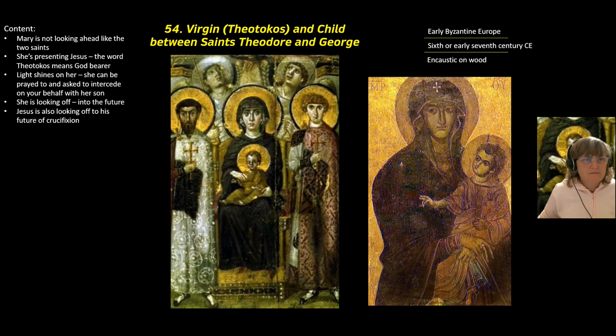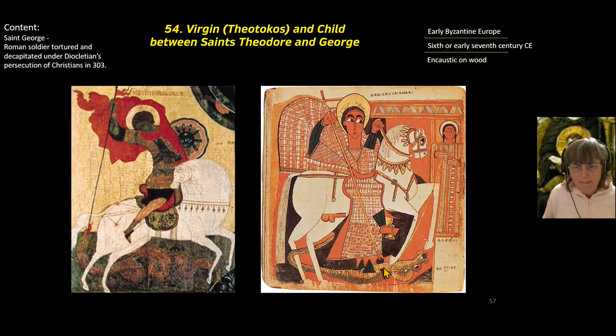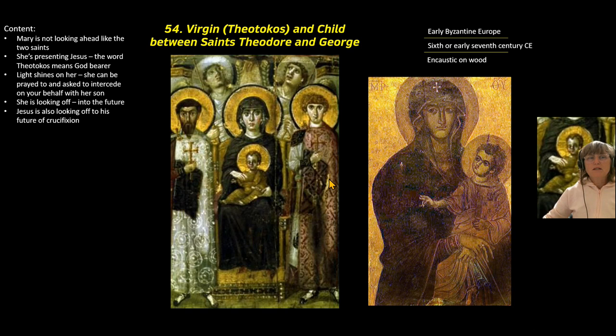Saint George was a Roman soldier whose story says he was tortured and decapitated because he refused to recant Christianity, which happened to him in 303 AD. He is mostly featured slaying a dragon — we hear of Saint George's school whose mascot is the dragon. Similarly, Saint Theodore also refused to recant Christianity and refused to participate in pagan worship, so he was thrown into a furnace. These two saints are aptly placed by Mary and baby Jesus's side because they are protectors of the faith.